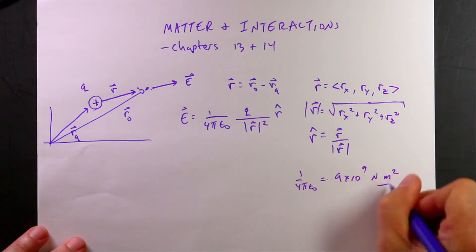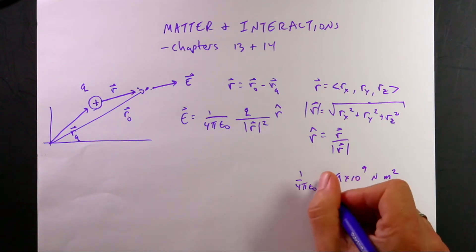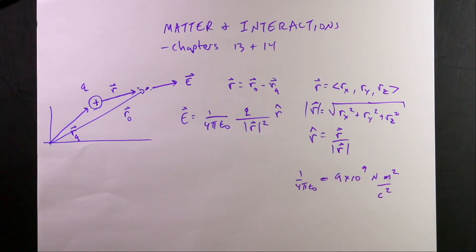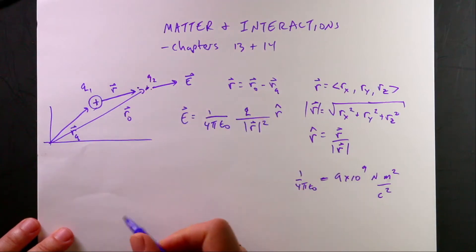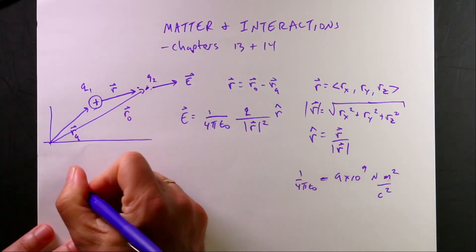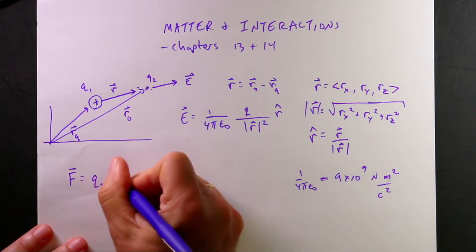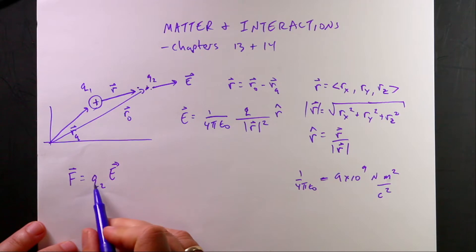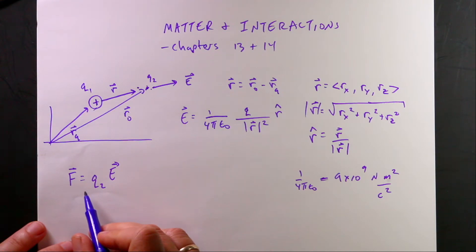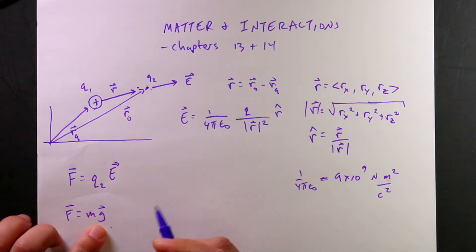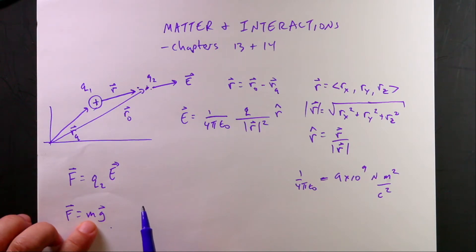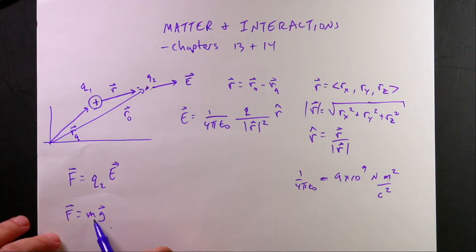Now, if I put a charge q1 there and another charge q2 nearby: if I place a charge in a region with an electric field, there's a force F equals q2 times E. So a charge in an electric field experiences a force that's just the product of those two. This is the same idea as gravity — F equals mg, where g is the gravitational field in newtons per kilogram. Multiply by mass and you get the gravitational force.